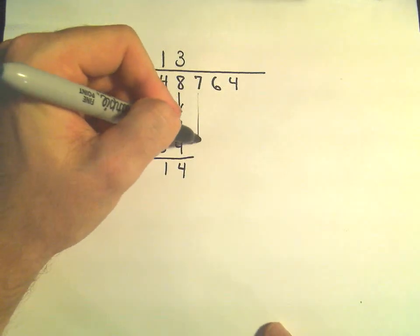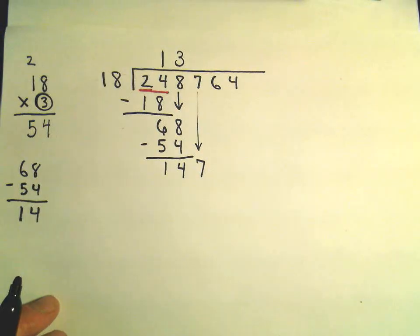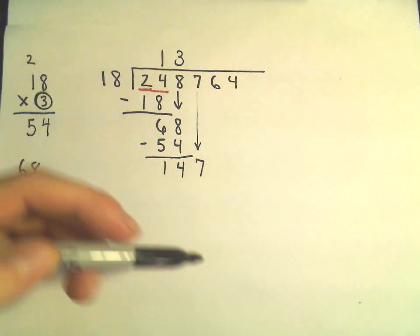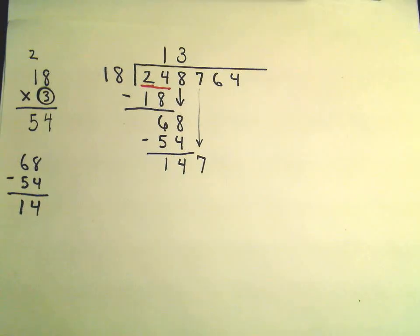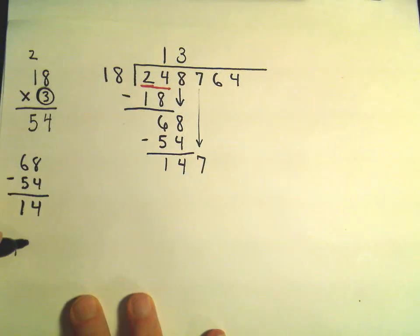Okay, so we drop our next number down. 147 looks like we're going to get. So again, this is where I'm like, blah, you know. C'est la vie. This is what you have to do. So let's see. How many times would 18 go into 147? Well, again, I'm going to round.